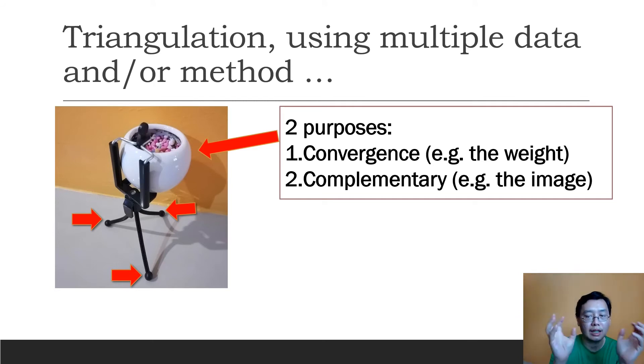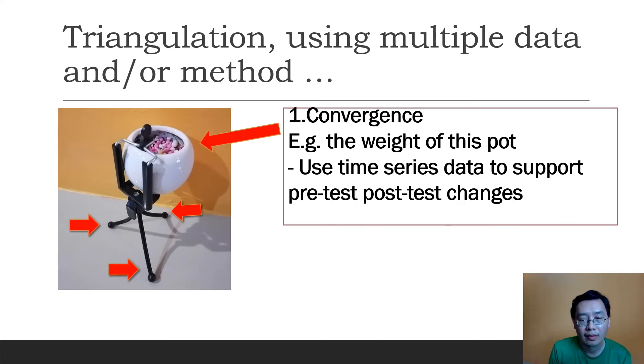Do I want to know the weight of this pot or do I want to look at the image? For example, I want to draw a picture of this pot, so I want to look at the image. In this case, I want to know the weight of the pot. So I could be taking measurement using three methods and three sets of data to see whether all of them come to an agreement.